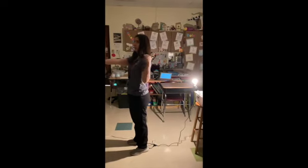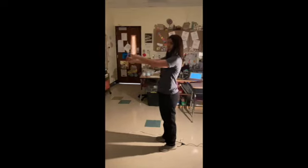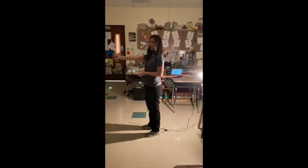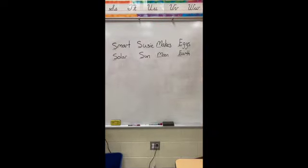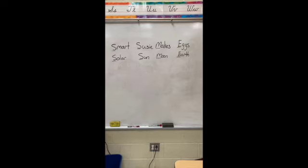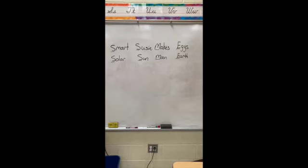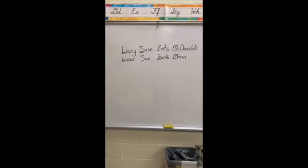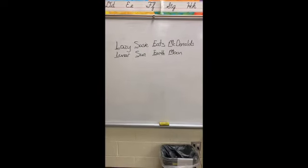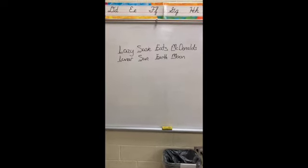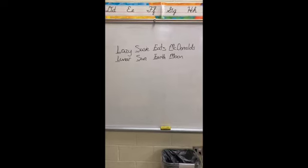For a lunar eclipse, the order is sun, earth, moon — draw and label that in your science notebook. One way to remember a solar eclipse: 'Smart Susie Makes Eggs' — solar, sun, moon, earth. A solar eclipse has sun, moon, earth in that order. One way to remember a lunar eclipse: 'Lazy Susie Eats McDonald's' — lunar equals sun, earth, moon in that order. A lunar eclipse is sun, then earth, then moon.